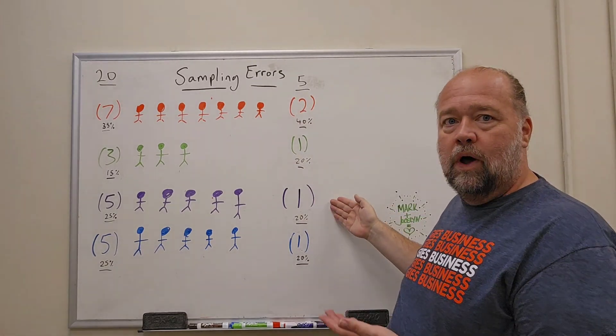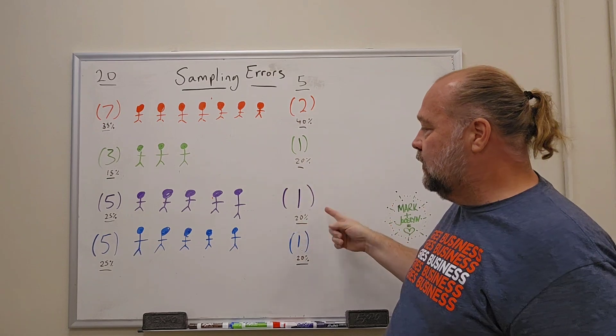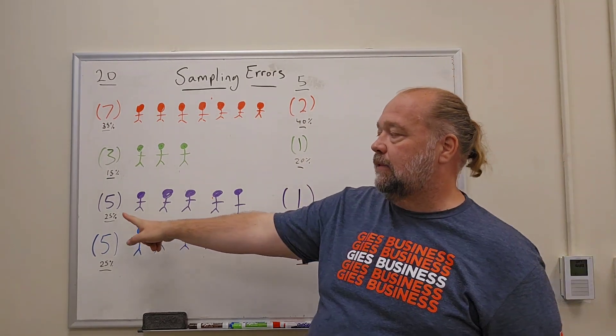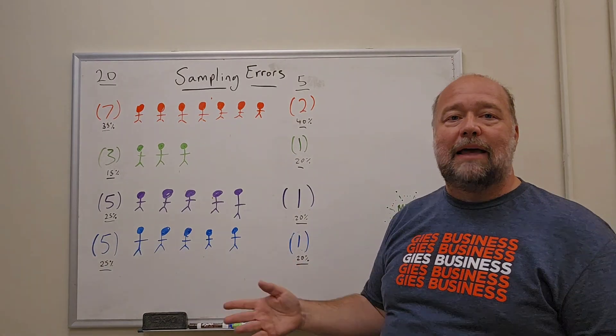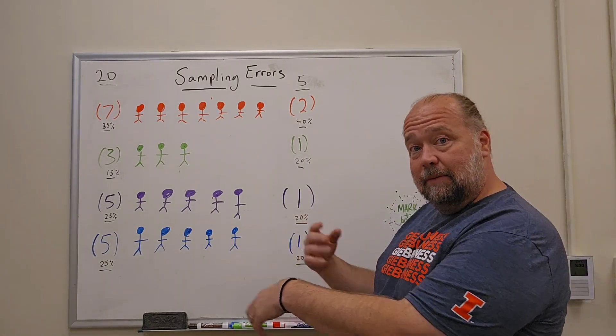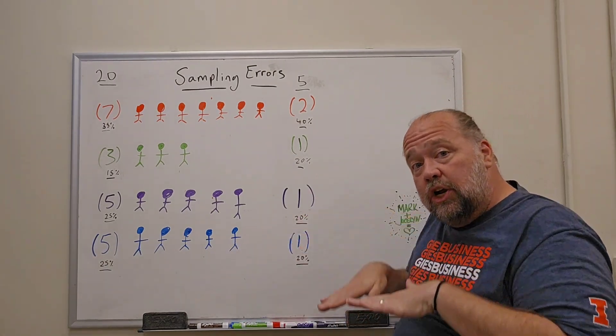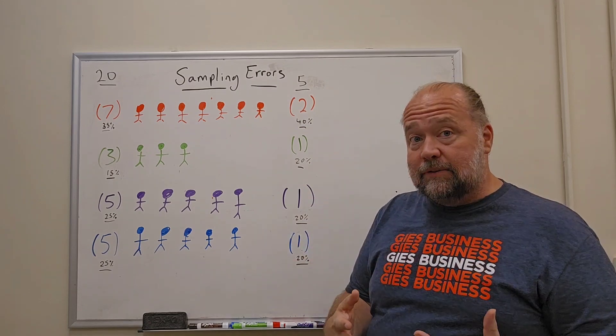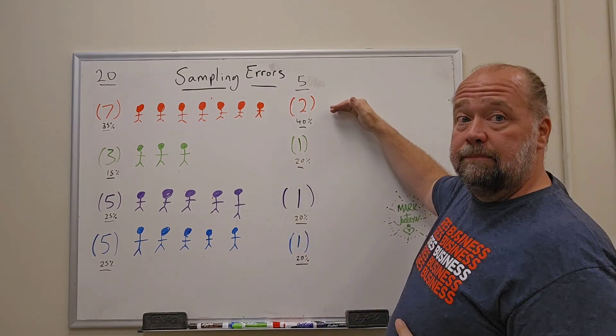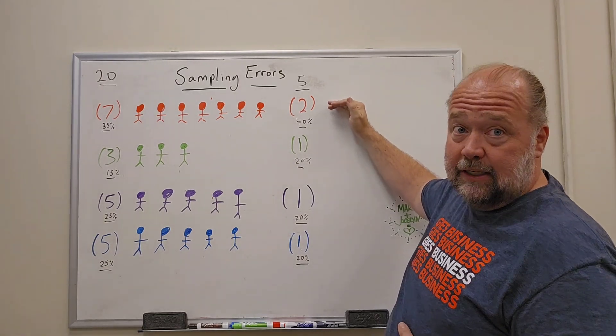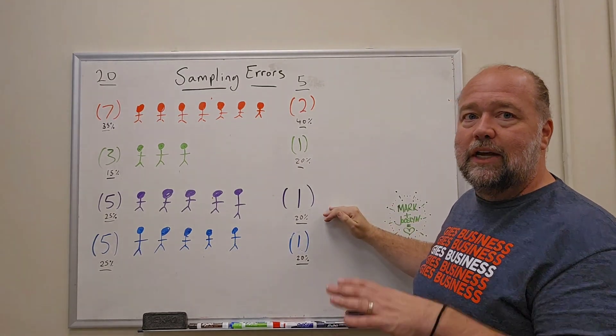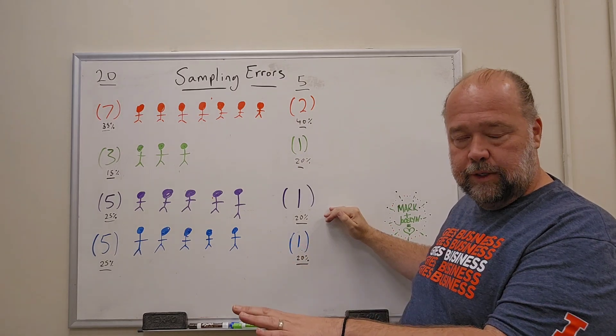So the purples, they have one out of the five. In the sample, they're only representing 20% of the sample. Whereas in the population, they're 25%. That means that there's 5% of them, that population, that isn't represented, so it's underrepresented. So that's what you have this idea of oversampled means in the sample, they're a bigger percentage than the actual population is, and undersampled is, they're getting a smaller percentage than what the actual population is.